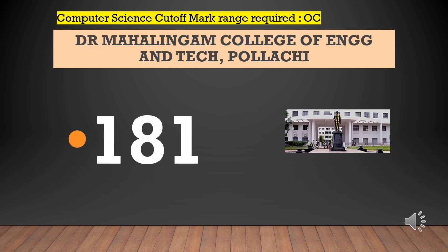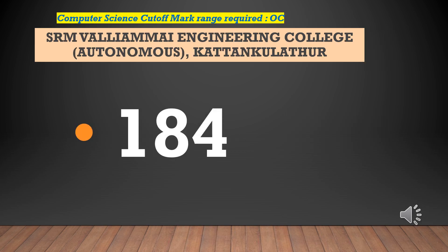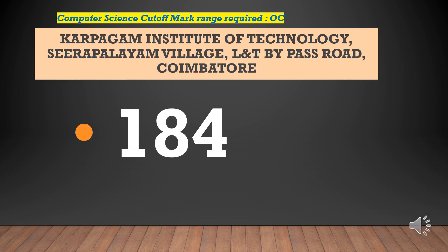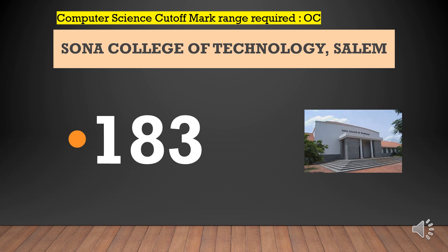Dr. Mahalingam College of Engineering and Technology — cut-off required for CSEOC is 181. SRM Valliammai Engineering College — cut-off required for CSEOC is 184. Karpagam Institute of Technology — cut-off required for CSEOC is 184. Thanthai Periyar Govt. Institute of Technology — cut-off required for CSEOC is 186. Sona College of Technology — cut-off required for CSEOC is 183.